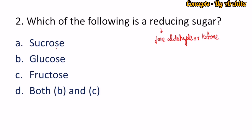But when we talk about sucrose, sucrose is not a reducing sugar. Because sucrose is a disaccharide, and the glucose and fructose groups present are involved in forming a glycosidic linkage, which means sucrose is a non-reducing sugar. So the correct answer is both B and C.